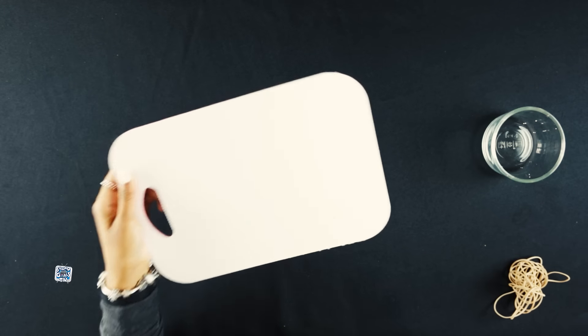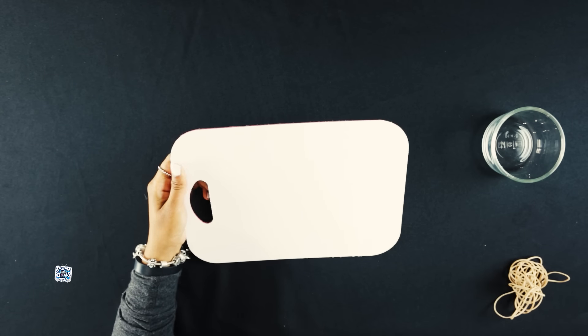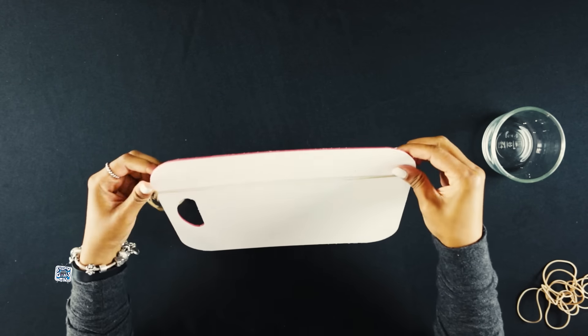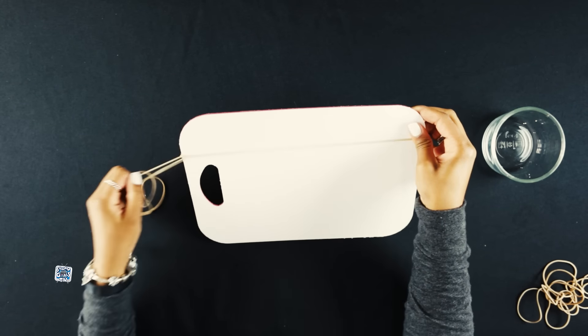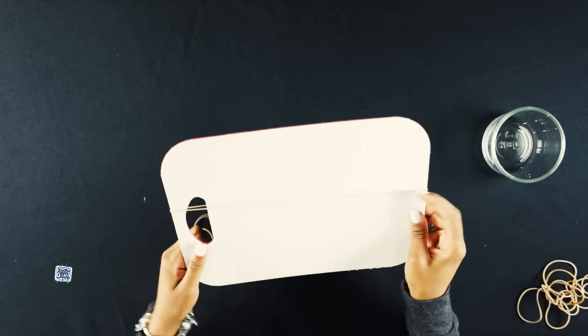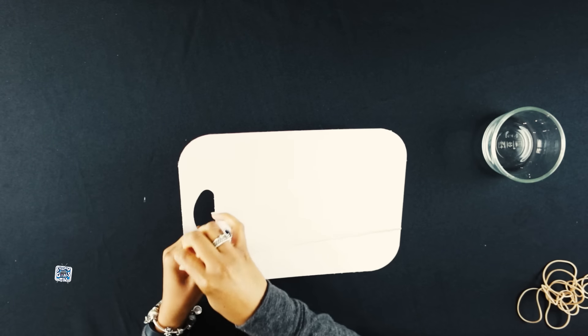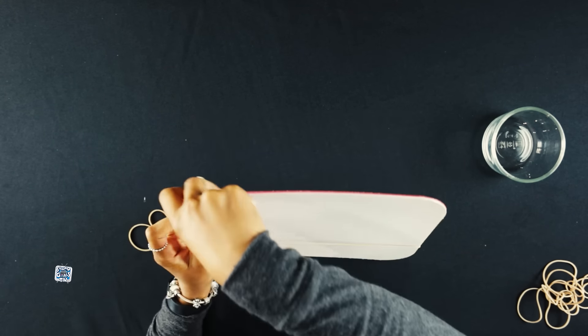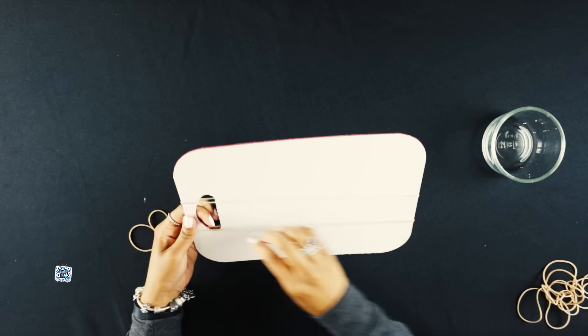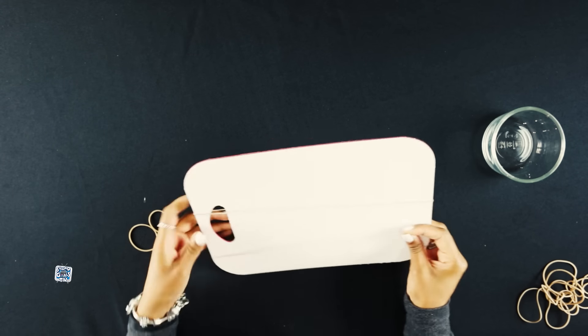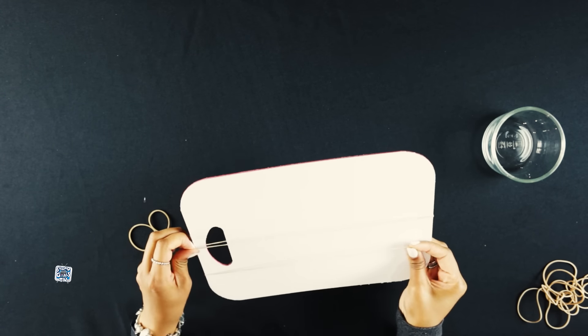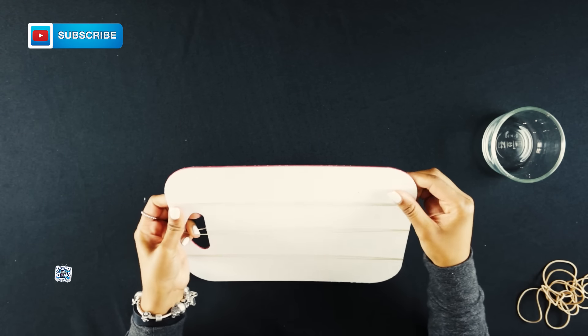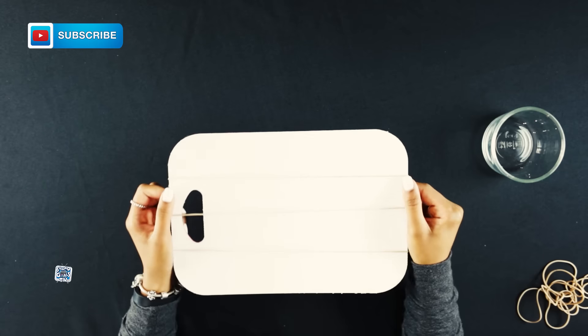What you're going to need is a cutting board or any type of board that you can put your brushes on. So you'll take an elastic and put it around like this and slide it down. Then you'll want to take another one and put it in the middle.